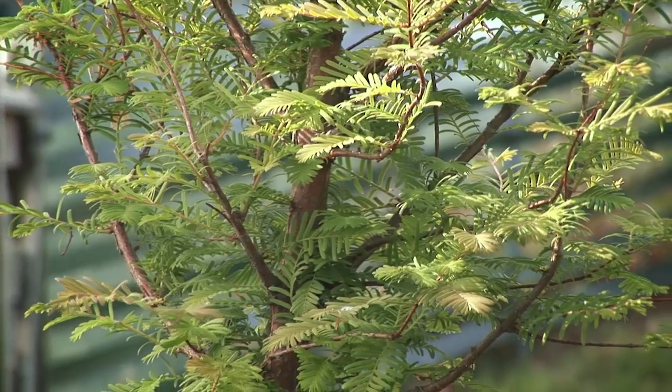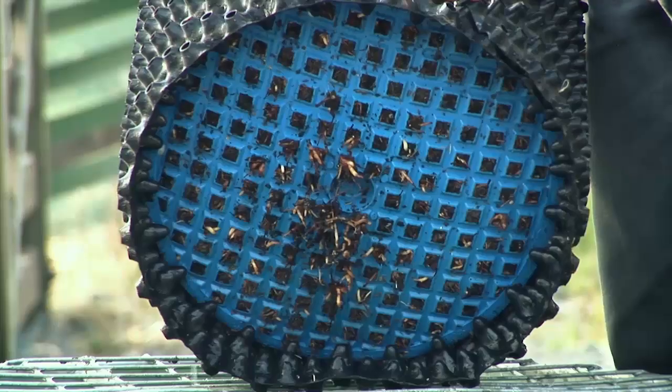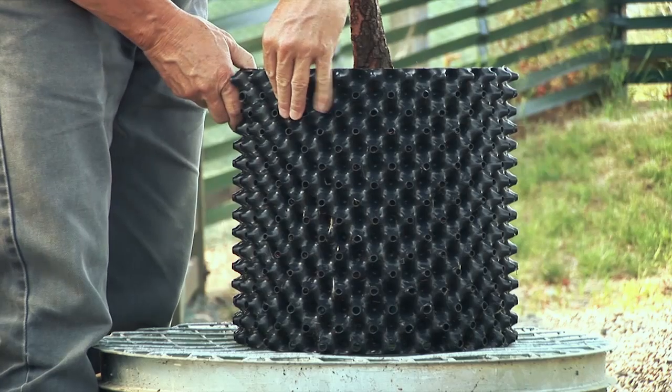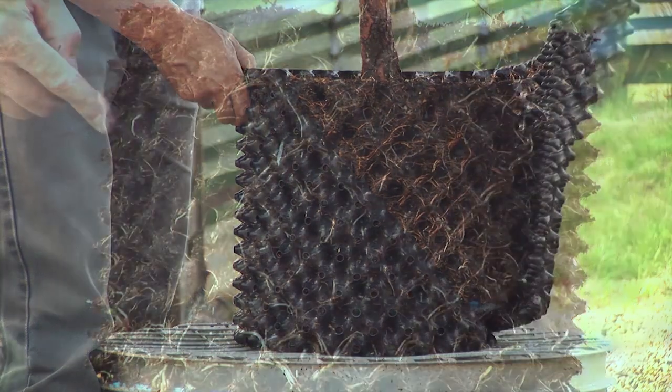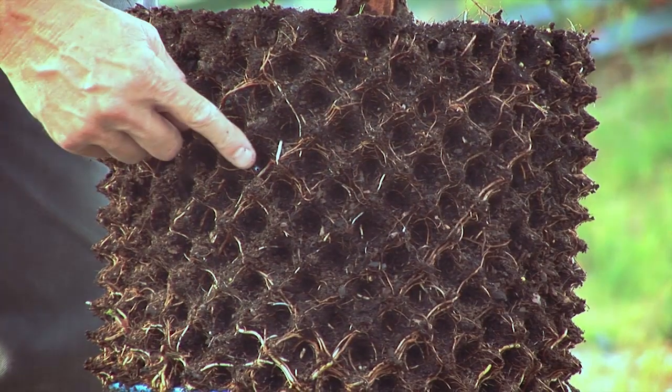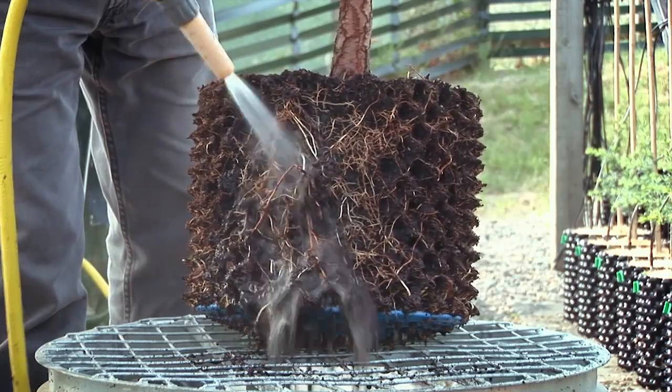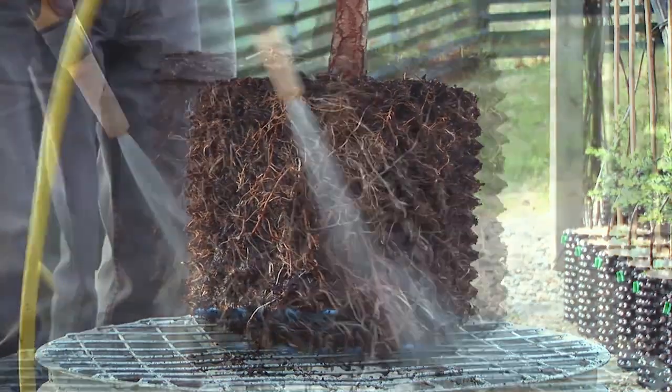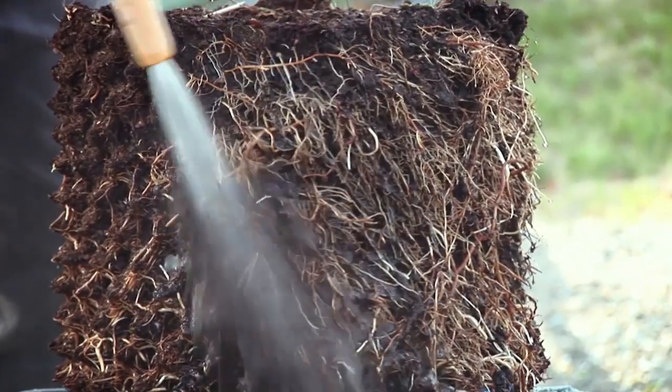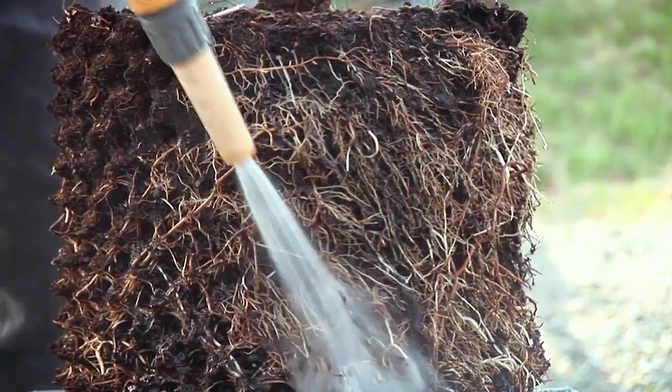After four years in an AirPot, this Meta Sequoia has developed an excellent root structure. To demonstrate, we washed away the compost. The air pruning has produced a dense mass of fibrous roots with no circling.